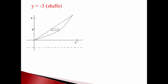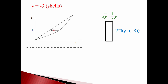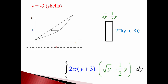Moving the axis down to negative 3: the width of the shell stays exactly the same — square root of y minus one-half y. What changed is just the circumference, because the center is now at negative 3. The circumference is 2 pi times the radius, and the radius from here to y is y minus negative 3, or y plus 3. So the integral becomes 2 pi times y plus 3 (the circumference) times square root of y minus one-half y (the width) times dy, integrated from 0 to 4.